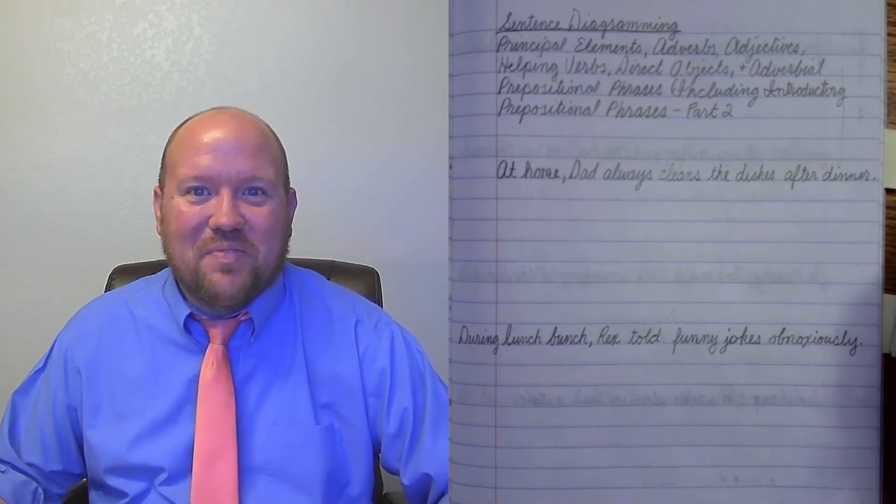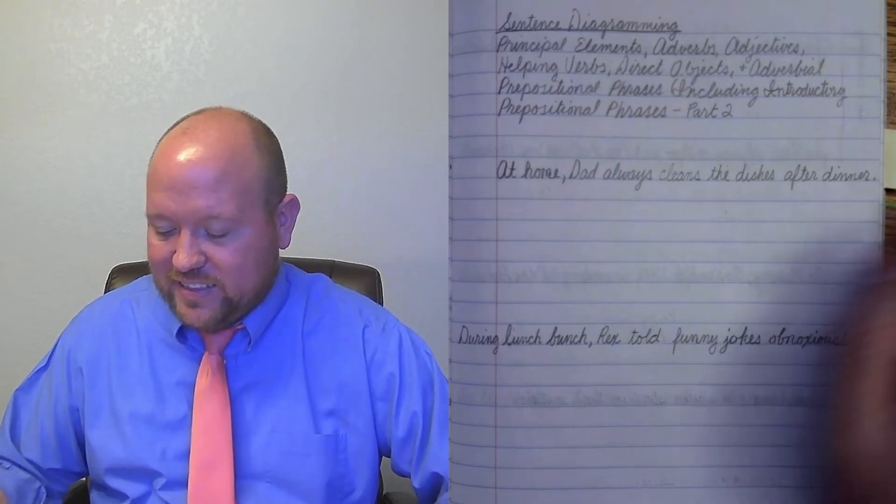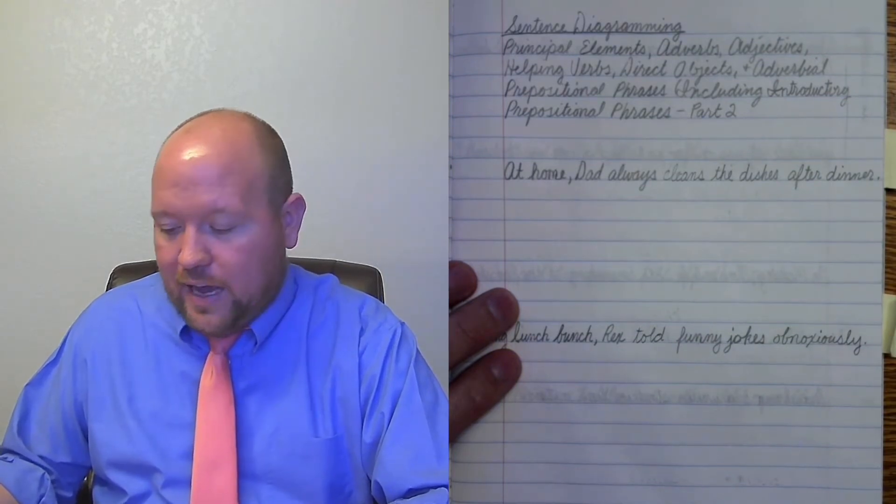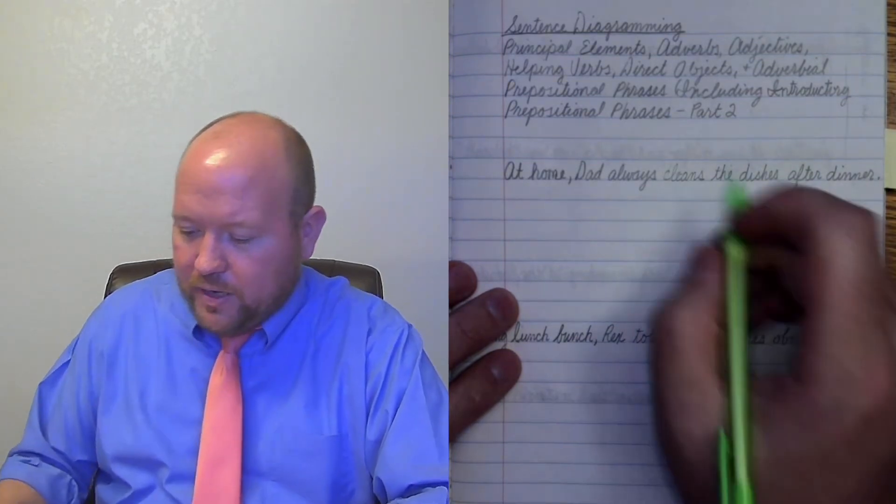All right. Let's begin by looking at this sentence. So it says, at home, dad always cleans the dishes after lunch. So what is our verb? Here our verb is cleans. So this is our predicate verb. Who or what does the cleaning is dad.